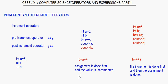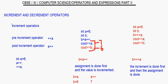For post-increment, the statement b = a++ is broken into two parts. First, the assignment: b = a, so b becomes 6. Then the second part, a++, so a becomes 7. When you print a and b, a will give 7 whereas b will give only 6, because the value was assigned before the incrementing.